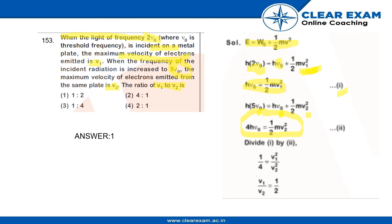Now we will divide equation 1 by 2. So upon dividing, we are getting 1 by 4 equals v1 square over v2 square, and v1 by v2 is half. So option 1 is the right answer.